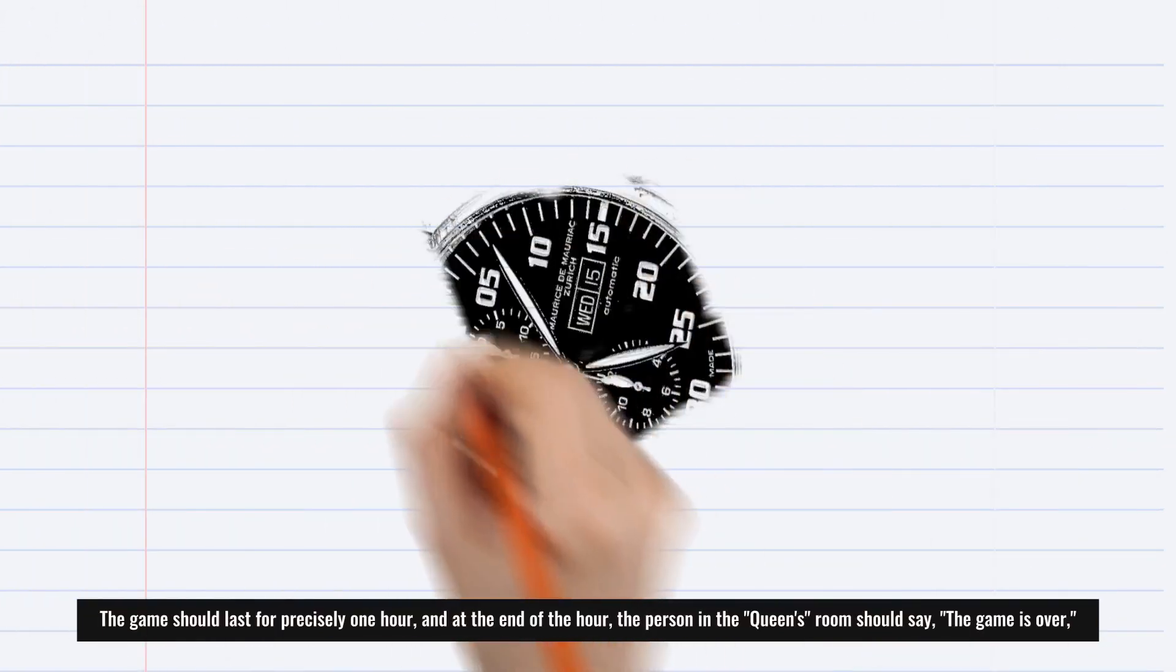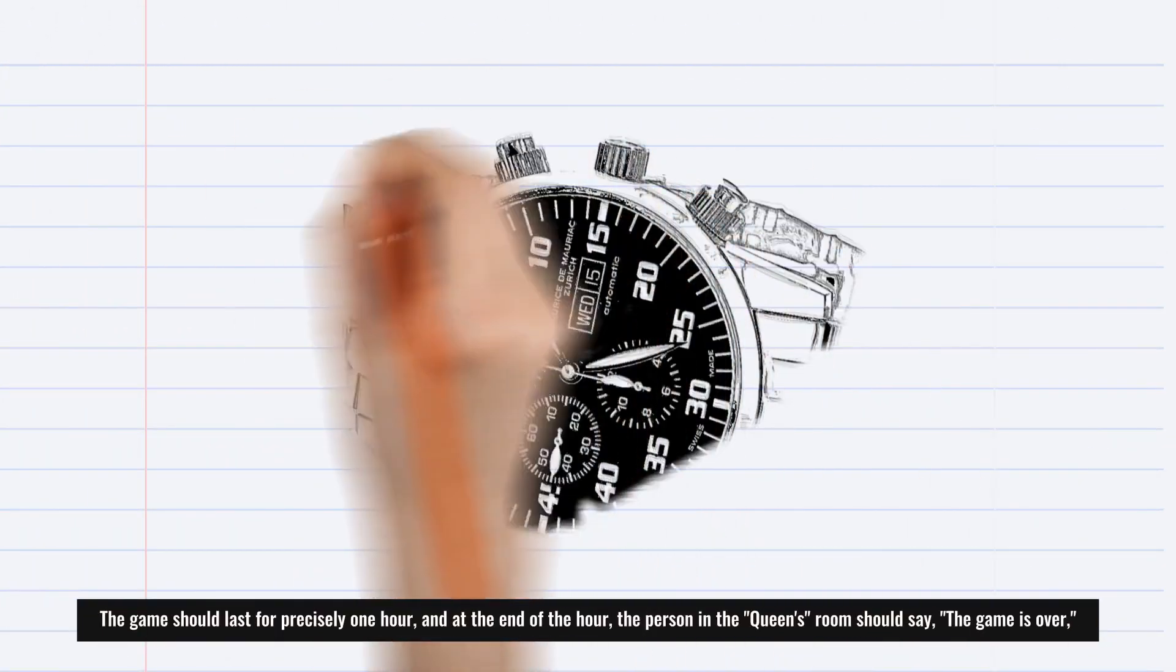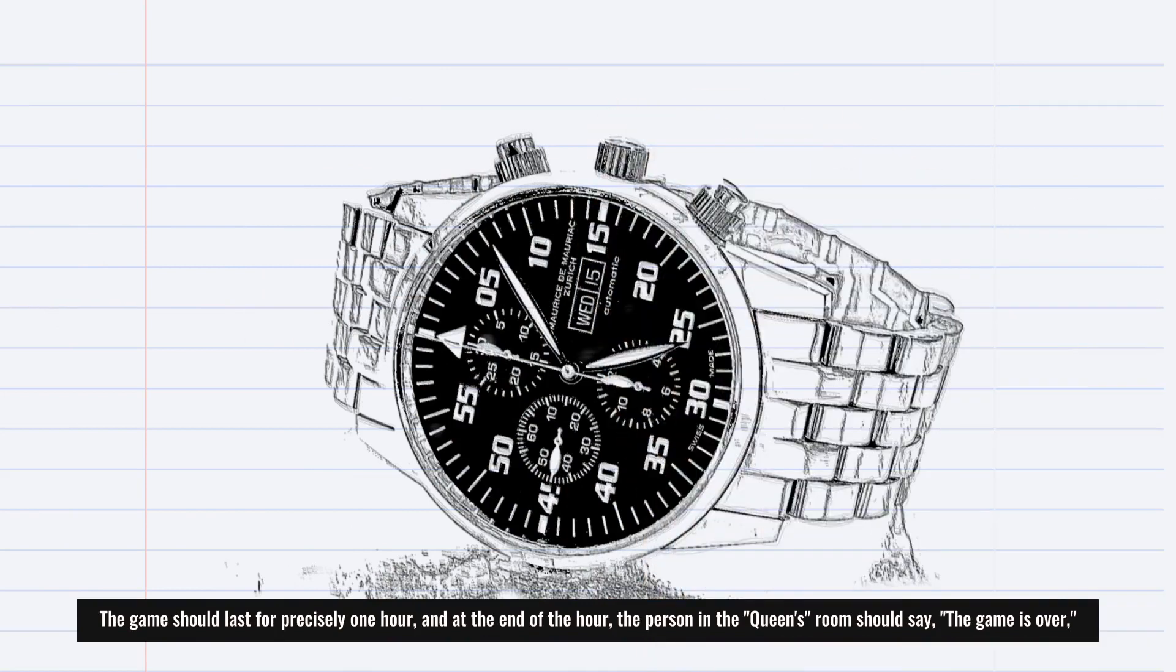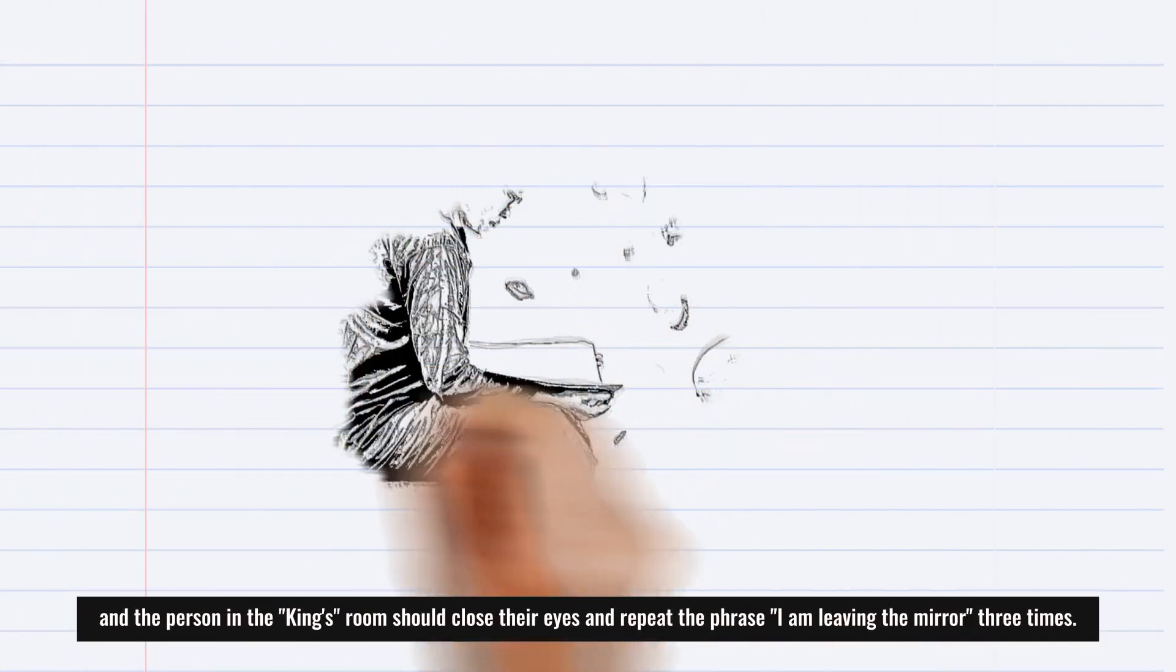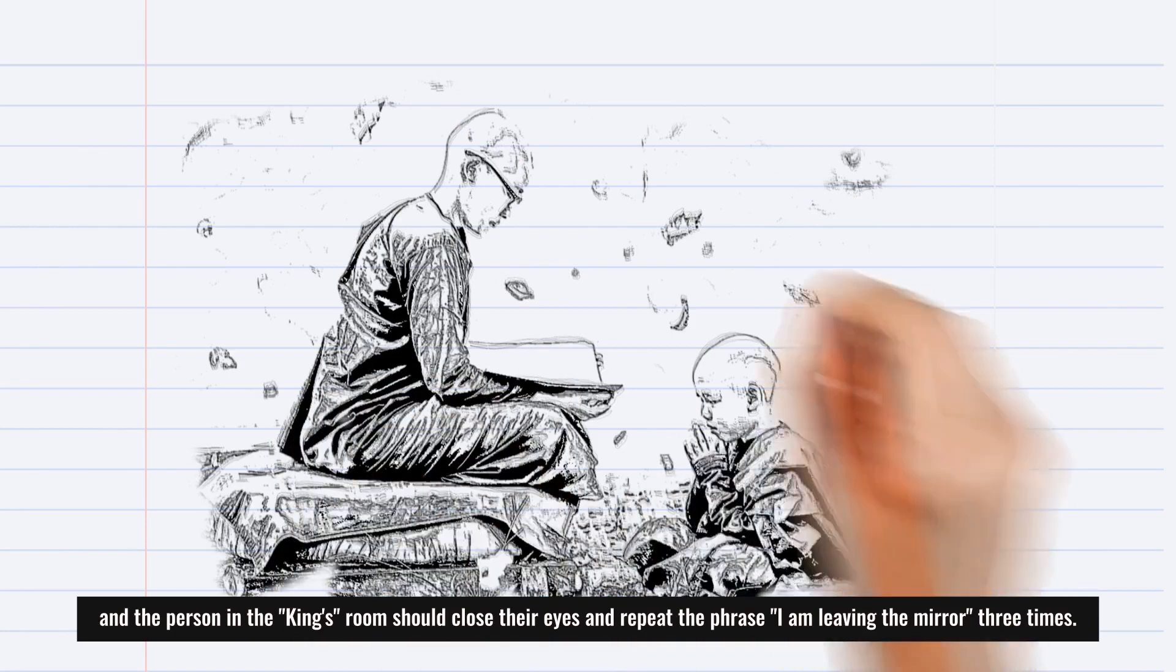The game should last for precisely one hour, and at the end of the hour, the person in the queen's room should say, 'The game is over.' The person in the king's room should close their eyes and repeat the phrase 'I am leaving the mirror' three times.